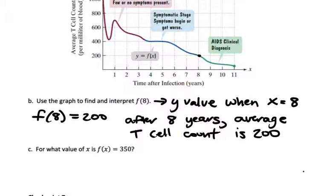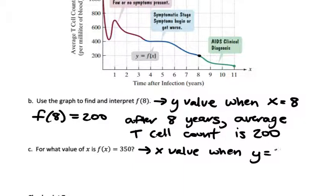Question C says: for what value of x is f of x equal to 350? So this is asking me, what is the x value when y is 350? When we have function notation, x is the input and f of x is the y when we graph. So for 350, I'm going to go back to my graph. 350 is going to be about right here on the y-axis, so I go across until I meet my graph.